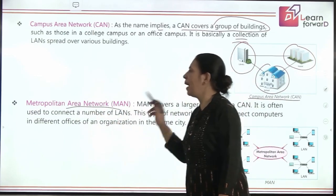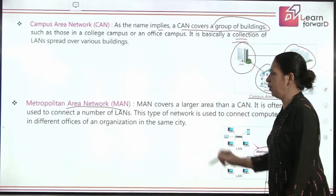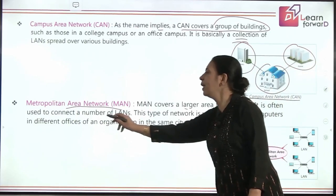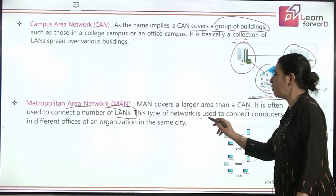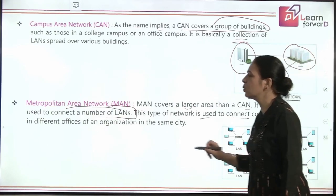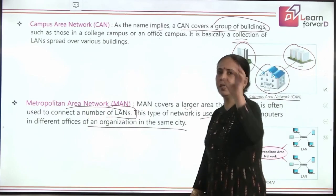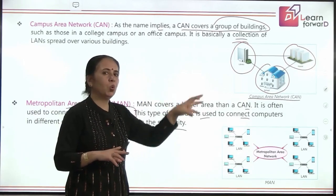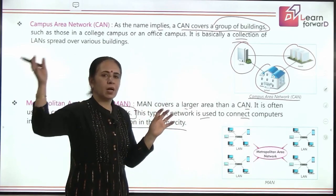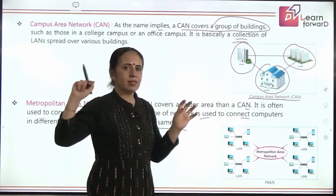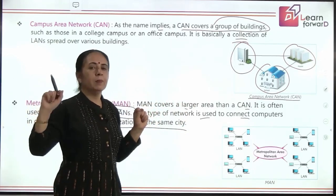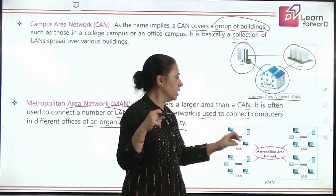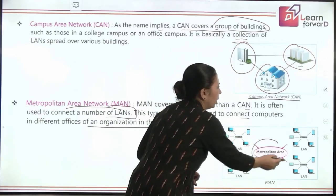Moving ahead, we come to MAN — Metropolitan Area Network — which covers a larger area compared to CAN. It is basically used to connect a number of LANs together. This type of network connects computers across different offices of an organization within the same city. For example, if a school has its primary wing, middle wing, and senior wing at different locations, and you want connectivity between these offices, you go for Metropolitan Area Networking.